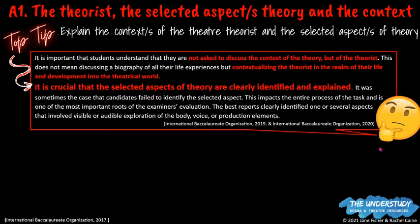It's crucial that you clearly and explicitly identify which selected aspect of your theory you are going to use in your performance. What happens is that some students haven't made this explicit, or they've failed to identify a particular theory and just use the theorist's work as a whole. This has a domino effect on the rest of your task — you need to talk about how you practically explored that aspect and evaluate how successful you were. If you don't explicitly state your chosen aspect, you will not do well in Criterion A, B, or D.